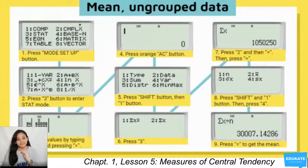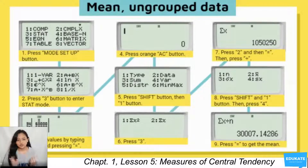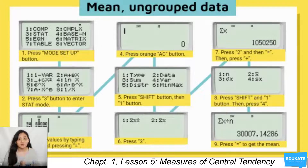There is a nine-step process for computing the mean of ungrouped data using a scientific calculator. Note that these specific steps are for a specific version of a scientific calculator, so not all calculators follow these exact steps. Make sure it is in stat mode. You can pause the video and try to compute the mean of the ungrouped data using this method.